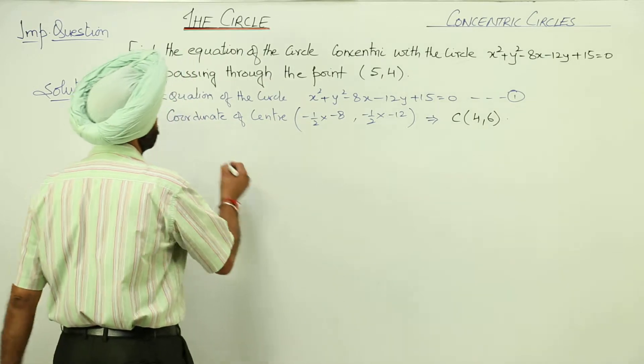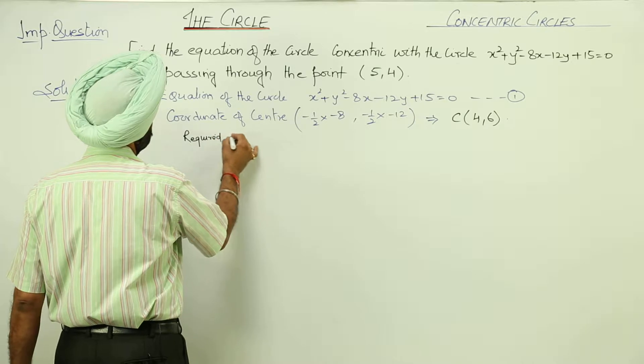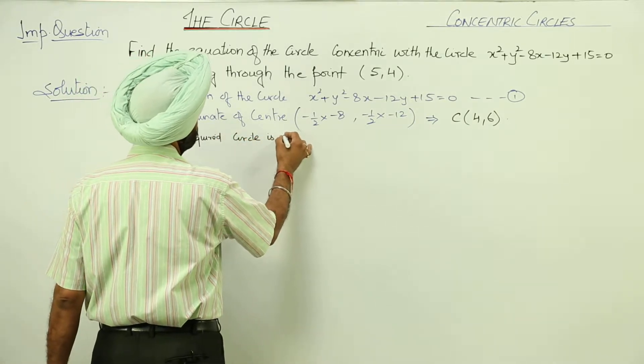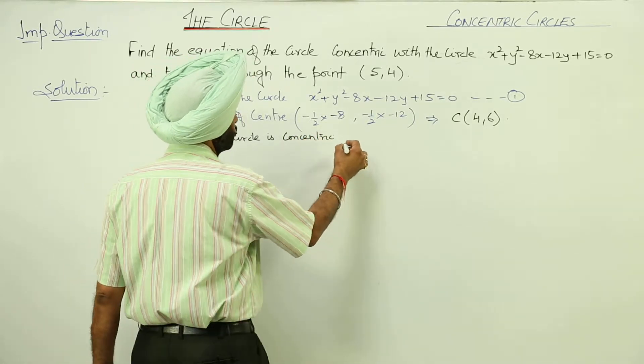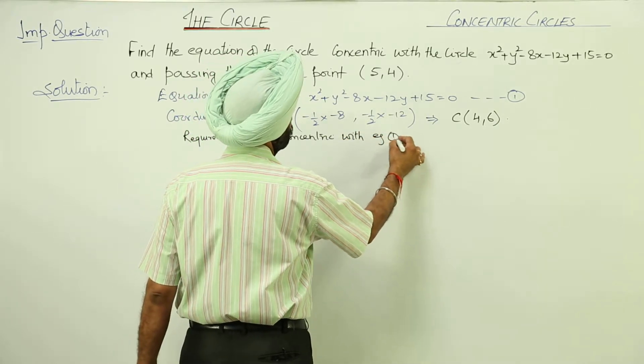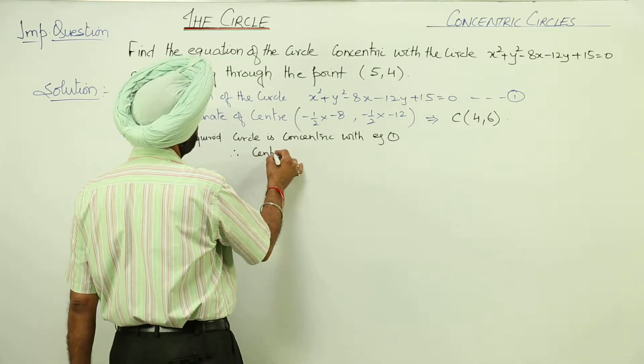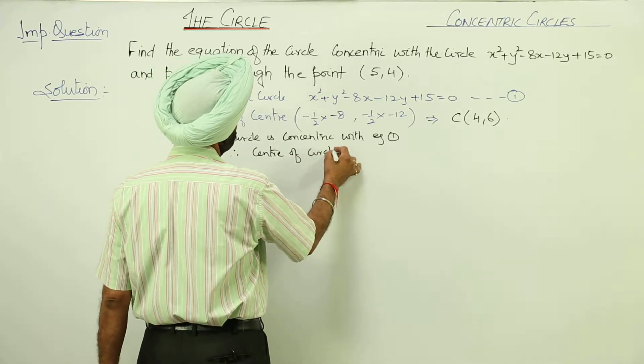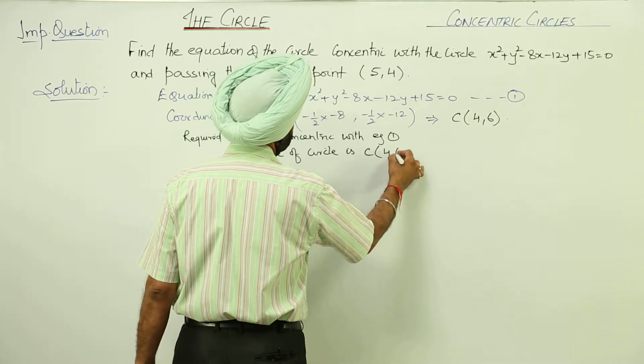The required circle is concentric with equation 1. Therefore, center of the circle is C(4, 6).